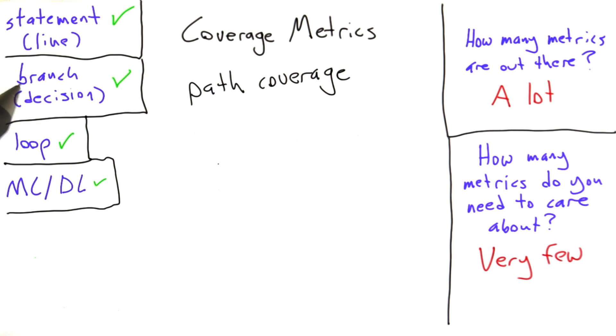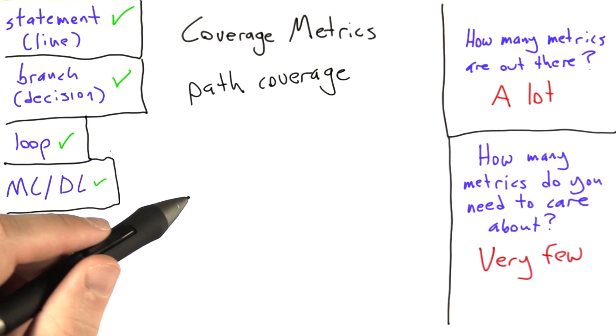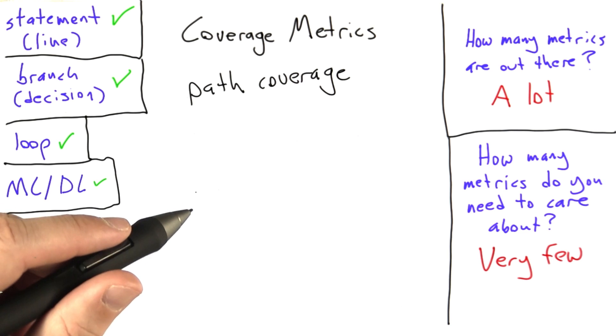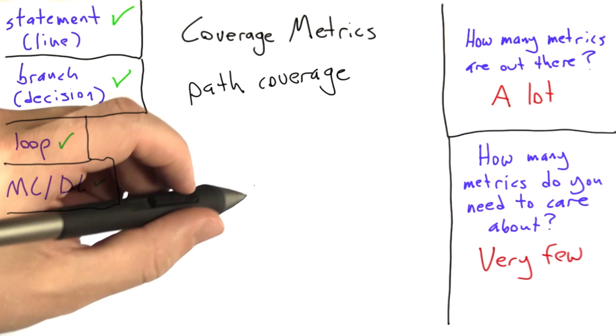So in general, things like statement coverage and branch coverage, and even to a large extent, MCDC coverage and loop coverage, don't really care how you got somewhere as long as you executed the code in such a way that you met the conditions. So path coverage cares how you got somewhere. Let's look at what that means.